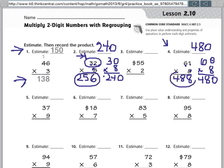So my real answer is 488. All right, so I hope this explains how to multiply two-digit numbers with regrouping to you and also how to estimate those answers. If you have any questions, please feel free to leave a comment. Thanks.